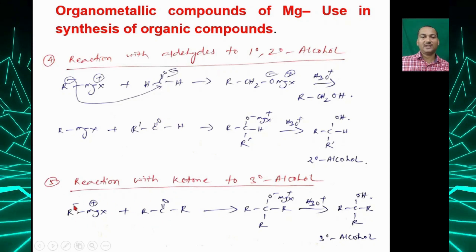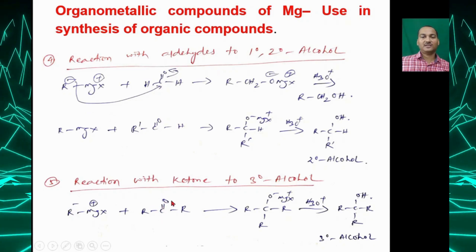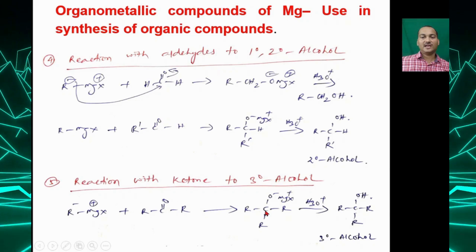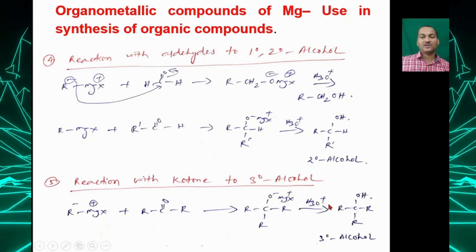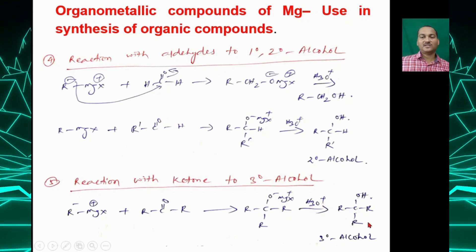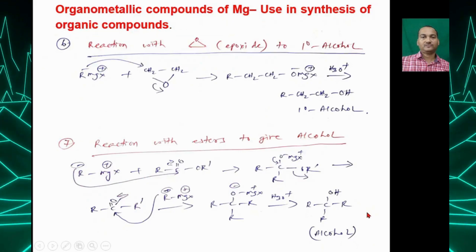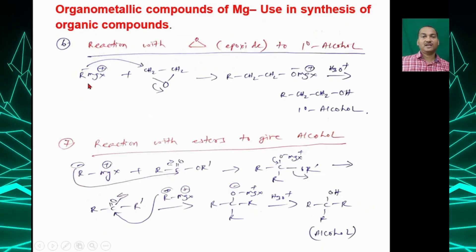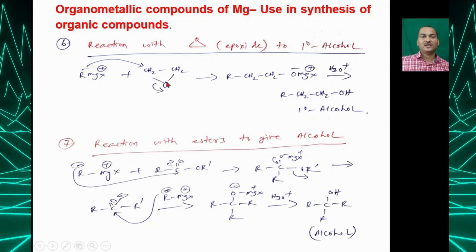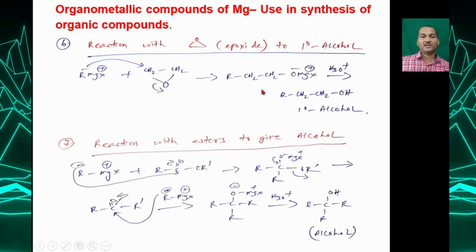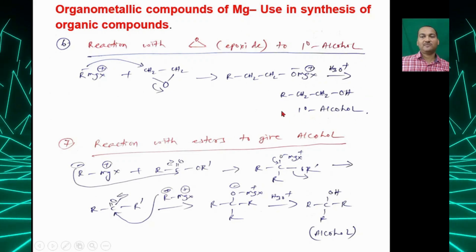Similarly, RMgX reacting with a ketone: R⁻ attacks the carbonyl carbon, the double bond breaks on oxygen to give R₃C-O⁻MgX⁺, and upon hydrolysis with H₃O⁺ you get a tertiary alcohol. With an epoxide, R⁻ attacks and the C-O bond breaks on oxygen; upon hydrolysis you can get a primary alcohol.